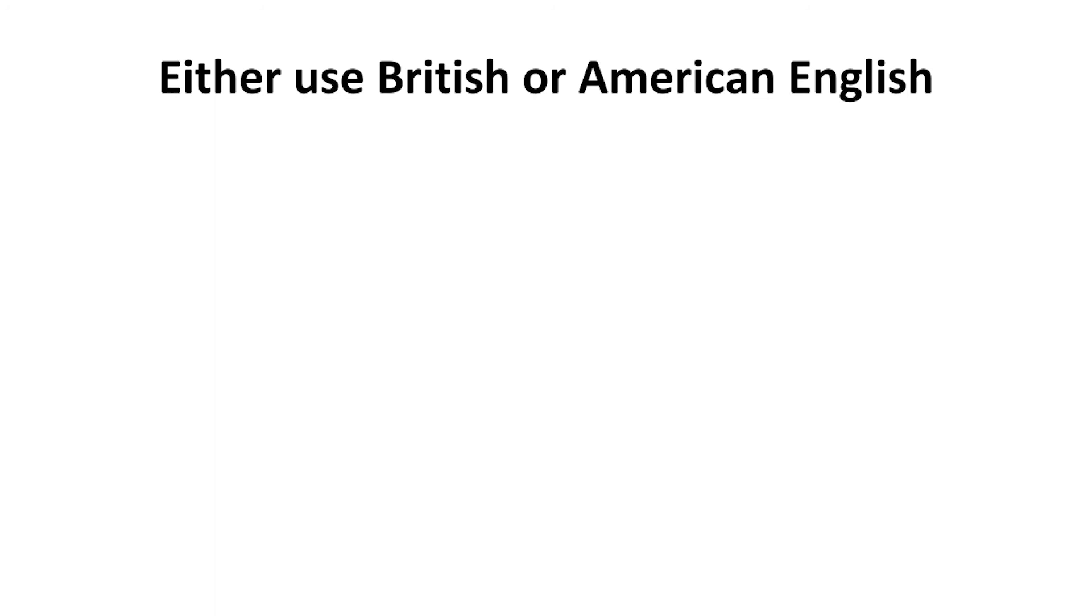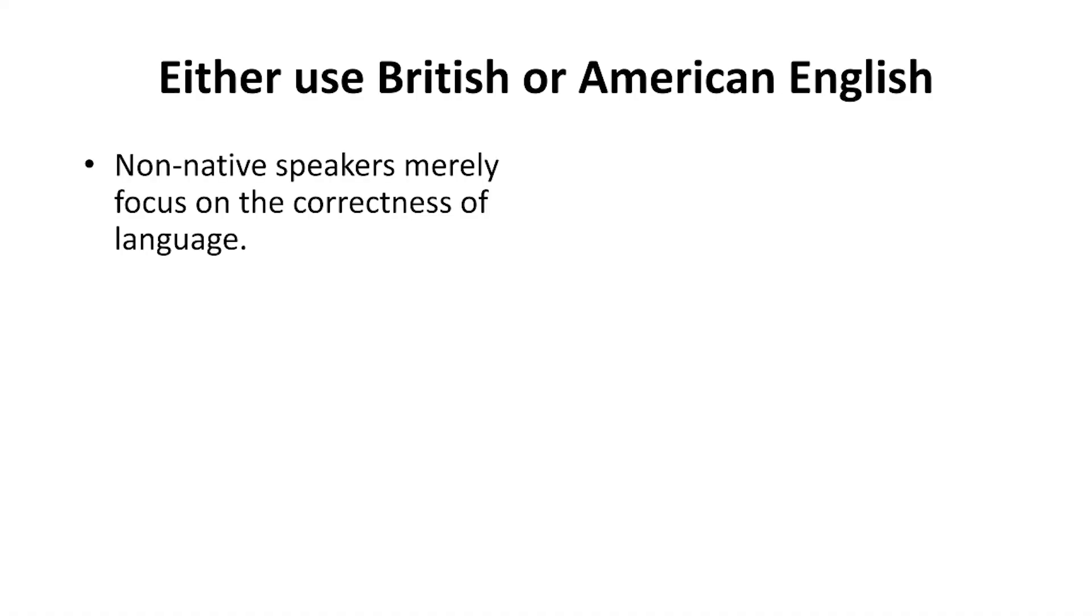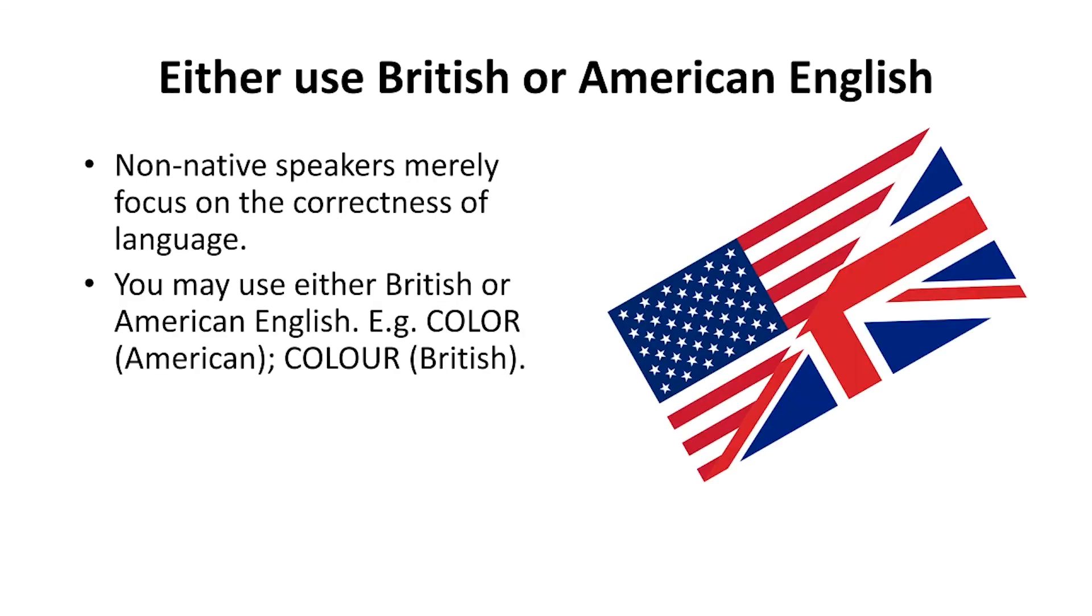For non-native speakers, however it looks very simple, either use British or American English. When you are writing, when you are speaking, we don't bother about whether you have written color or colour. But non-native speakers merely focus on the correctness of language. They do not subscribe to any one variety of English. You may use British or American English being a non-native. Color, colour—spelling may change in American and British English. However, you must choose one. Please remember this thing, otherwise it would be confusing for readers and reviewers.